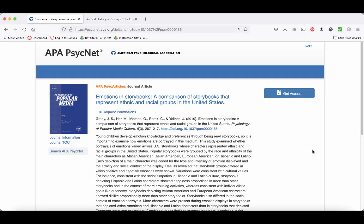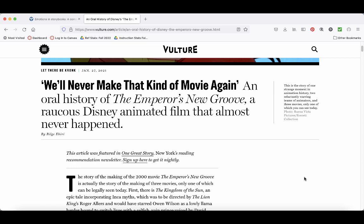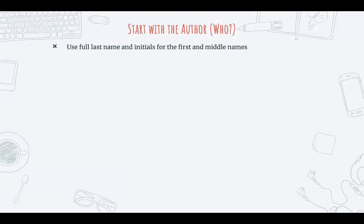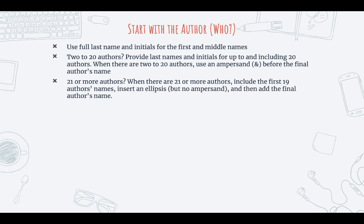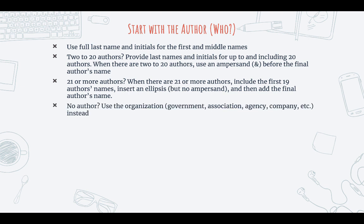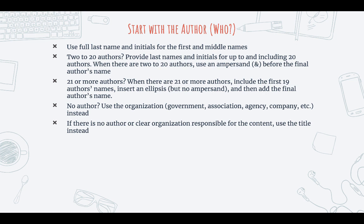Let's say you're using quotations from an academic peer-reviewed journal article and an online article from Vulture magazine. How would you create the reference citations for these two articles? First, you start with the author. Use the author's full last name and use initials for their first and middle names. If you have two to twenty authors, provide last names and initials for all of them, and use an ampersand before the final author's name. When there are twenty-one or more authors, include the first nineteen authors' names, insert an ellipsis but no ampersand, and then add the final author's name. If there is no author, use the organization responsible for the work — for example, a government agency, association, or company. If there is no clear organization, use the title of the work instead. Here are examples of the authors from the two articles we are citing.